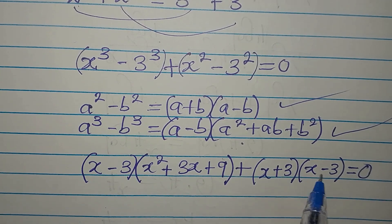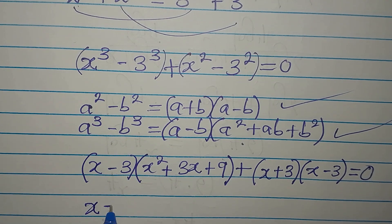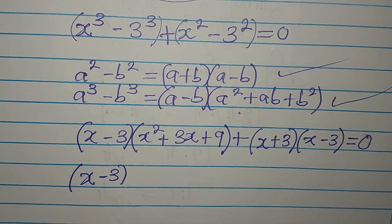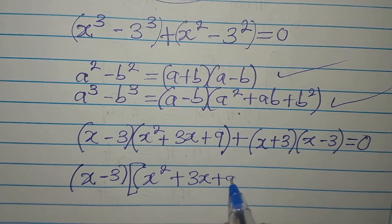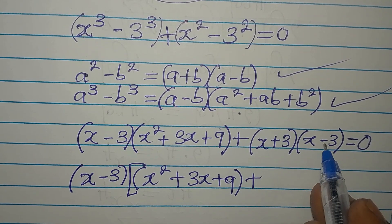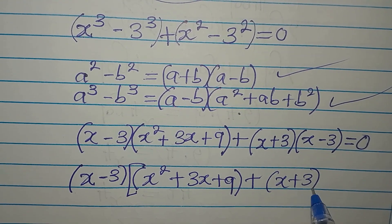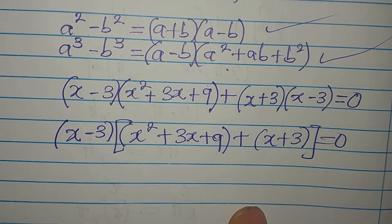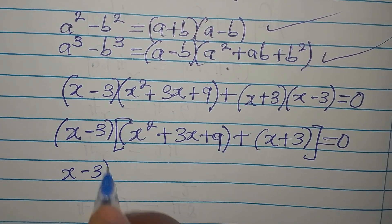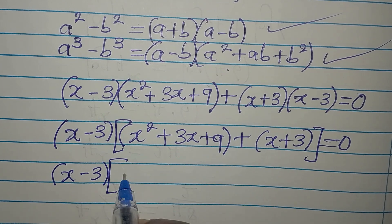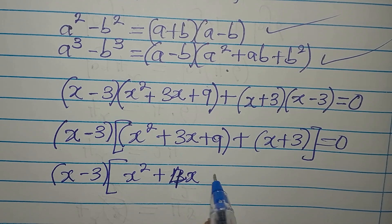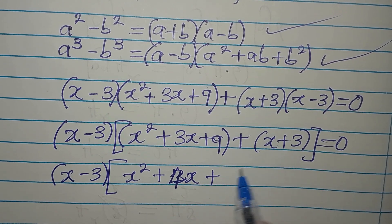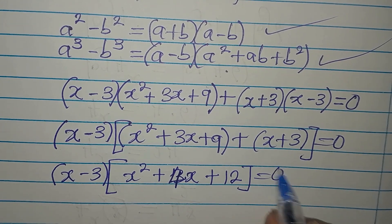Now (x - 3) is a common factor to both terms. Factoring it out, we have (x - 3) times the quantity [(x² + 3x + 9) + (x + 3)] equals zero. Combining like terms inside: 3x + x gives 4x, and 9 + 3 gives 12, so we get (x - 3)(x² + 4x + 12) = 0.